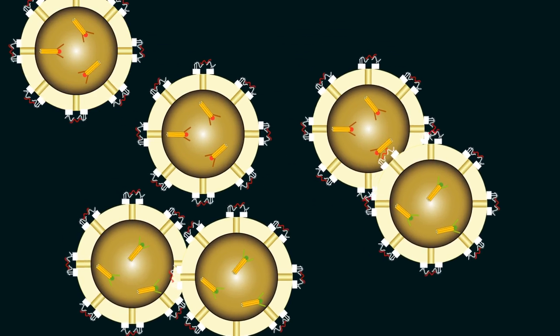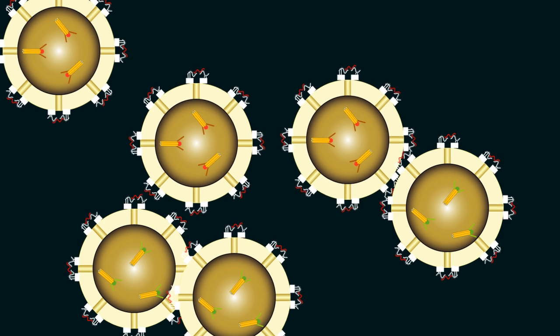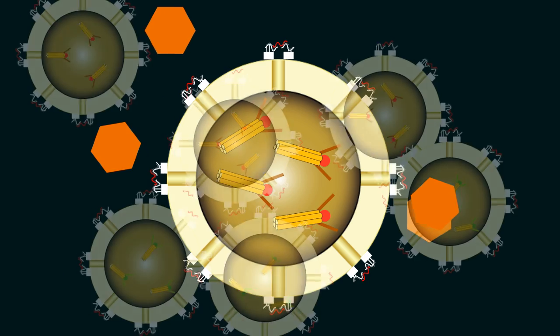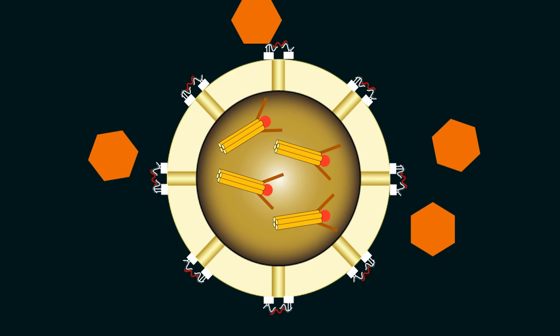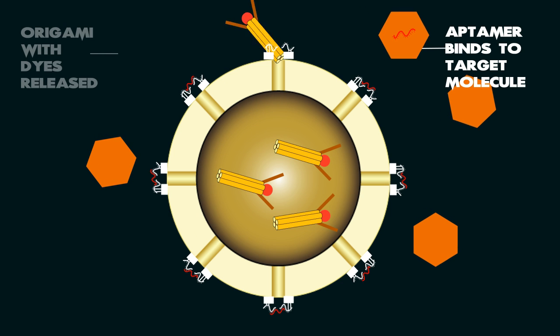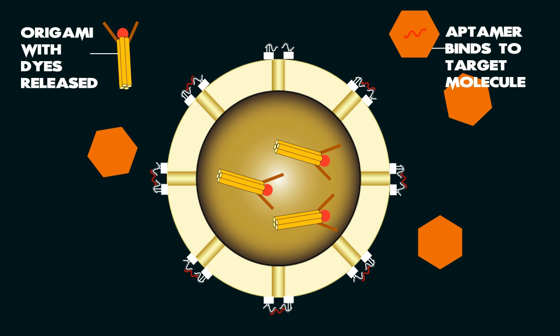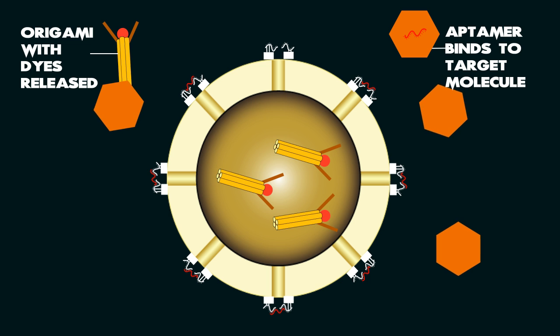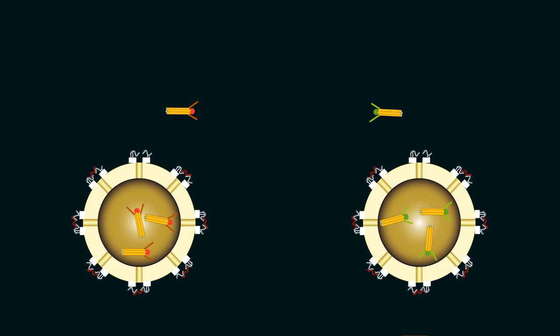Following this, a mixture of the two sets of nanoparticles can be taken and added to the sample to be tested. If the target molecule is present in the sample, it binds with the aptamers, hence disintegrating the mesh. Now, the DNA origami can easily come out of the pores. Once in solution, the two types of origamis bind to each other with the help of guide strands. This brings the two dyes closer, leading to a red fluorescence upon excitation.